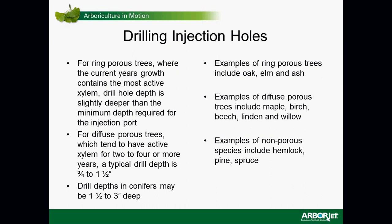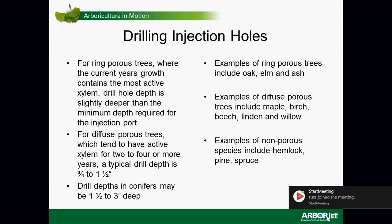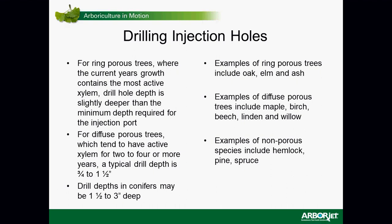For ring porous trees — oaks, elm, and ash — with large vessels, the most recently laid-down wood is the most active xylem for uptake. Drill shallower, just the depth or slightly more than the depth of your injection port. For diffuse porous trees with smaller vessels, you can drill deeper — anywhere from three-quarters to an inch and a half. For conifers, sapwood is at least two inches thick and you can drill anywhere from a half inch to two or three inches into the tree.